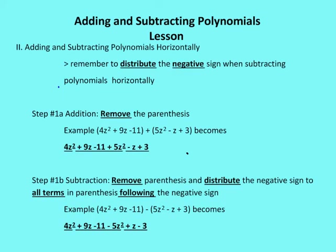We can also add and subtract polynomials horizontally. The key trick is to remember to distribute the negative sign when subtracting polynomials horizontally. For addition, we just remove the parentheses, because the addition sign keeps the same signs in the second polynomial. So 4z squared plus 9z minus 11 plus 5z squared minus z plus 3 simply becomes those same terms written out, and then we combine like terms.